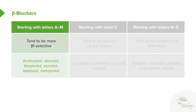Beta blockers that start with letters A to M are generally beta-1 selective and useful for cardiac inhibition. Examples include acebutolol, atenolol, bisoprolol, esmolol, labetalol, and metoprolol — those are the commonly used clinical ones. If you remember A to M is beta-1 selective and for the heart, you'll be a long way.